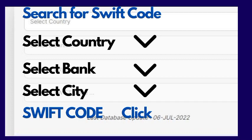You will find the SWIFT code. Some banks will show one SWIFT code; some banks will show two SWIFT codes. If you click the SWIFT code, you will get the full address. Select the nearest one for your SWIFT code.